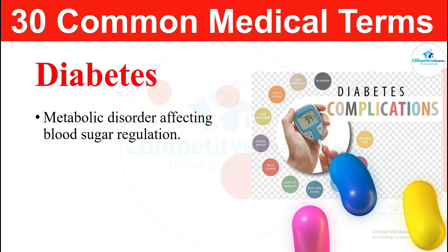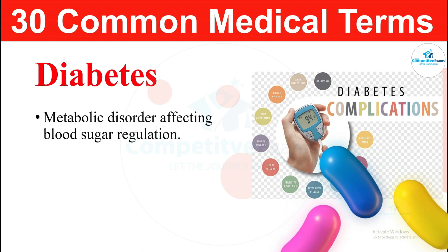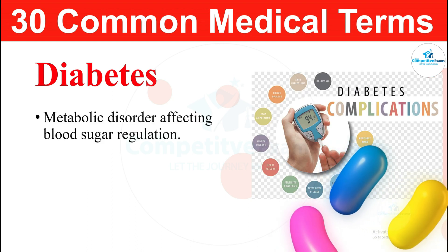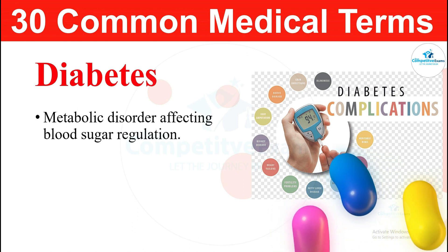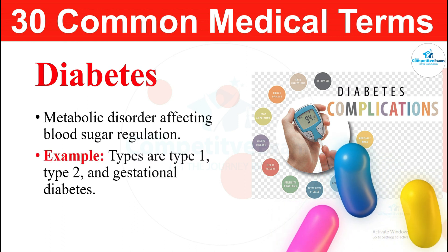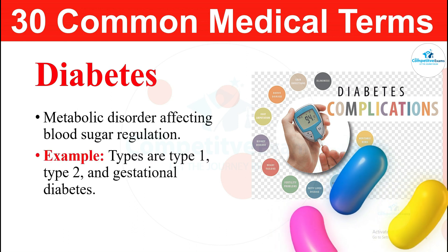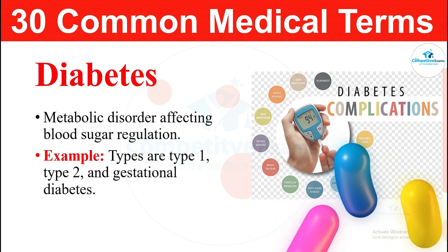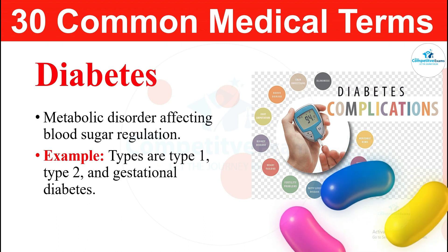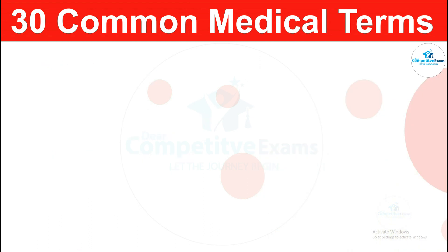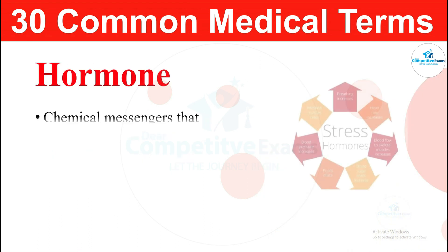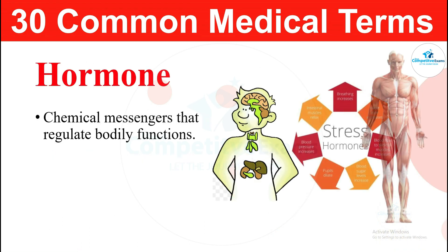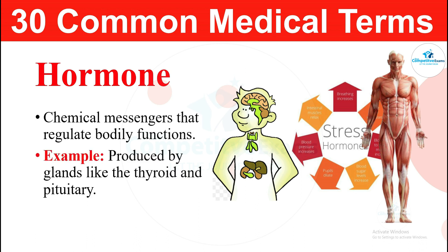The next medical term: diabetes. Diabetes is a metabolic disorder affecting blood sugar regulation. We have types of diabetes like type 1 and type 2. The next term: hormone. Hormones are chemical messengers that regulate bodily functions. They are produced by glands like the thyroid and pituitary.